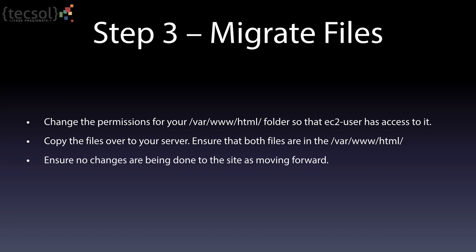Now coming on to the third step of the process - we are going to use the wget command to migrate your files from your existing cPanel server onto your newly created EC2 instance. We created a static.zip file as well as a db.zip file and these are the files we are going to copy over. The reason I do it this way is it makes sense to migrate files between the servers directly because all these servers are connected to a very high-speed internet backbone. The only other way is to download the zip files and upload back into EC2, which is a very slow process - if your site is around 2 GB, that transfer is going to take quite a bit of time.